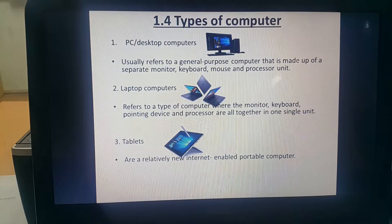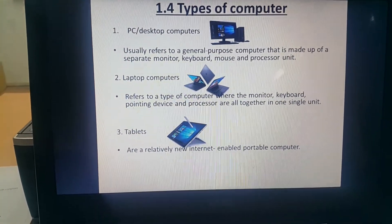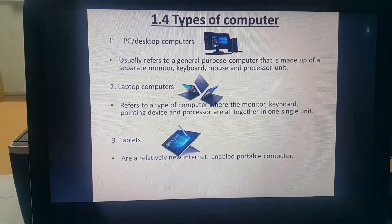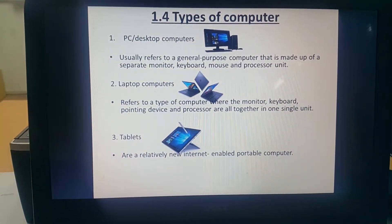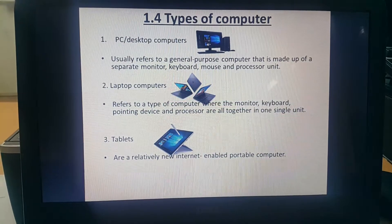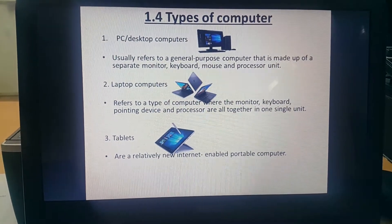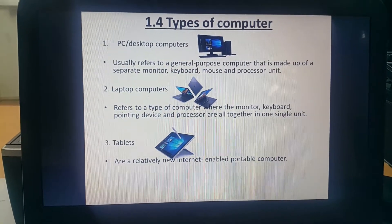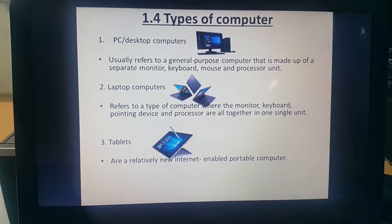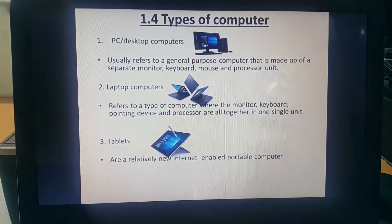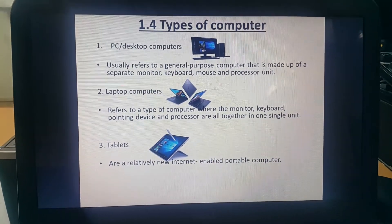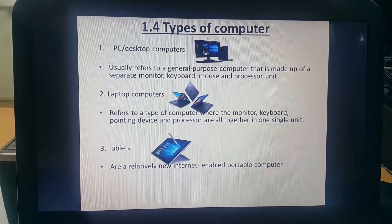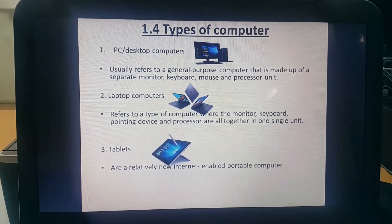We have 6 types of computers. I will explain all the differences between them. The first type of computer is the PC, or Personal Computer, also called a Desktop Computer. It is a general purpose computer made up of a separate monitor, keyboard, mouse, and processor unit.